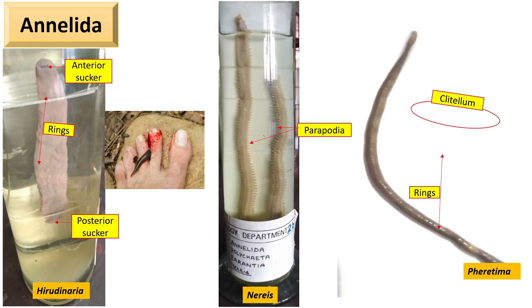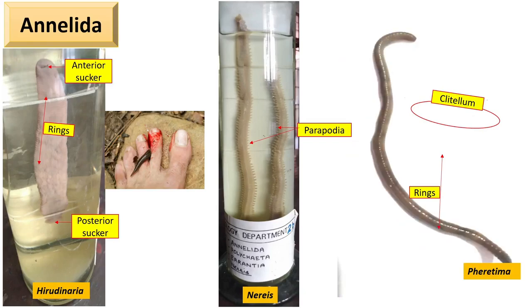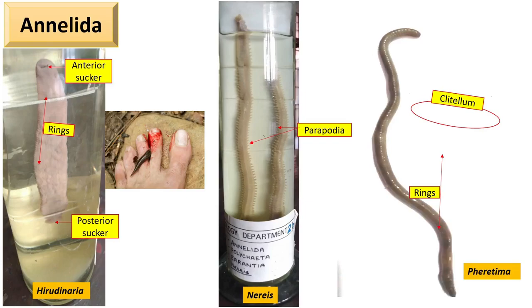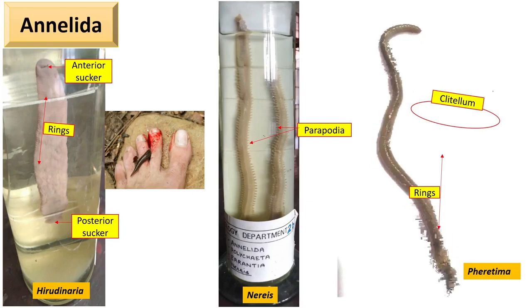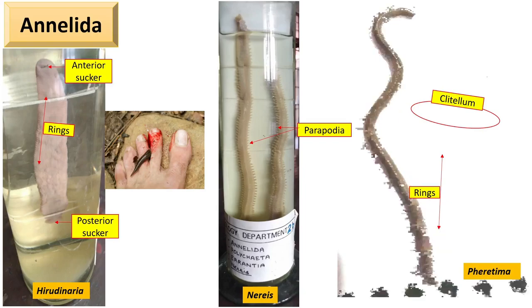Earthworms and leeches have a thickened, light-colored, glandular, and non-segmented section near the head region. This structure is called the clitellum, which stores eggs to form a cocoon.